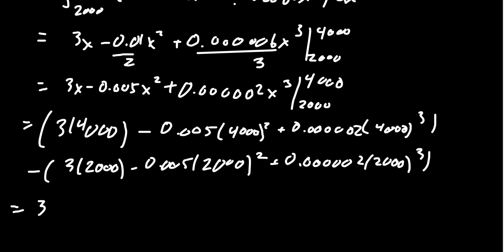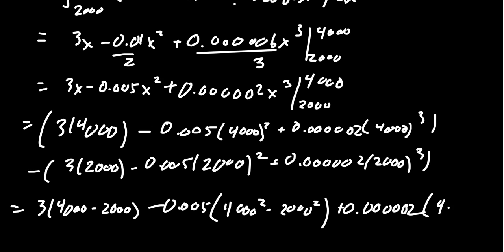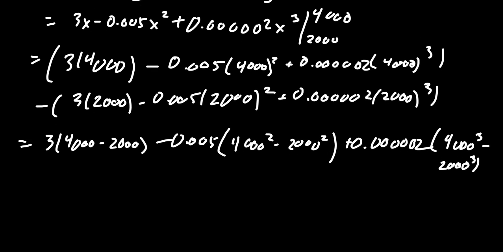So we could compute this as 3 times 4,000 minus 2,000. We're also going to get negative 0.005 times 4,000 squared minus 2,000 squared. And then lastly, 0.00002 times 4,000 cubed minus 2,000 cubed.